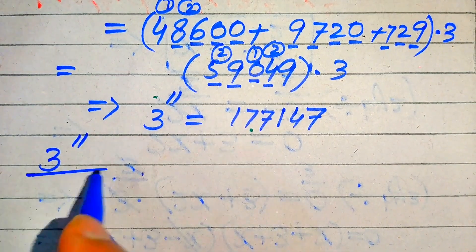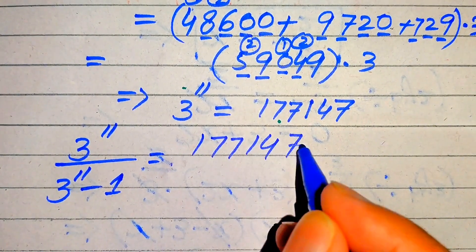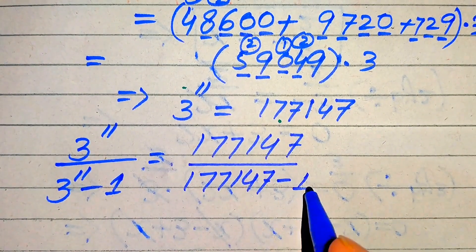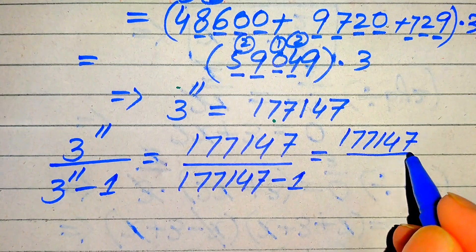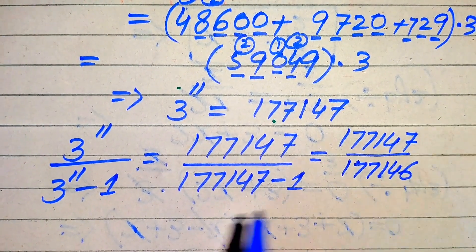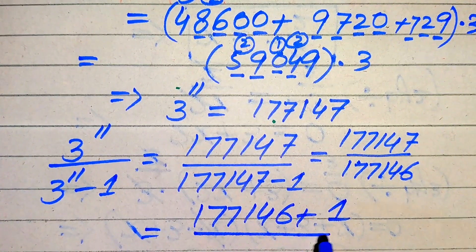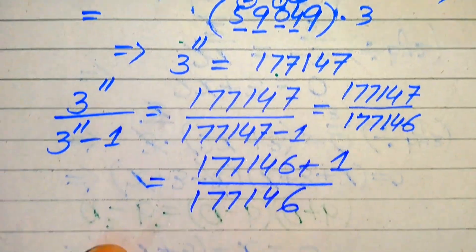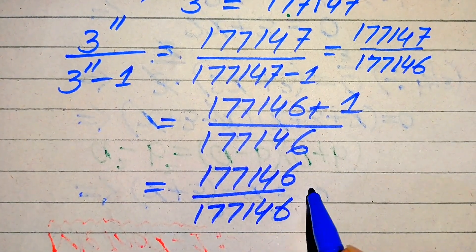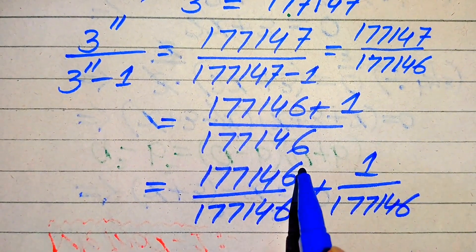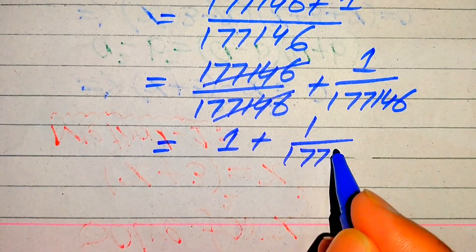We now have 3 to the power of 11 divided by 3 to the power of 11 minus 1, which equals 177,147 divided by 177,147 minus 1. When we subtract 1, we get 177,147 divided by 177,146. We then break the numerator as 177,146 plus 1, divided by 177,146, which gives us 177,146 over 177,146 plus 1 over 177,146. The first fraction cancels to give 1 plus 1 over 177,146.